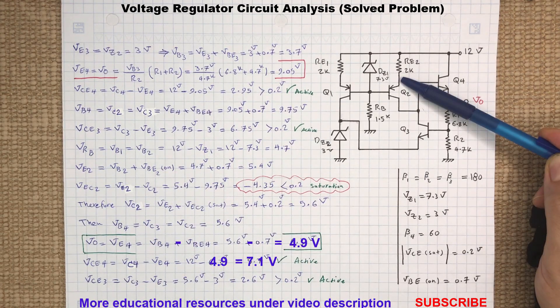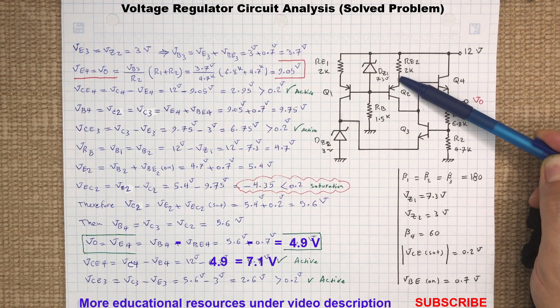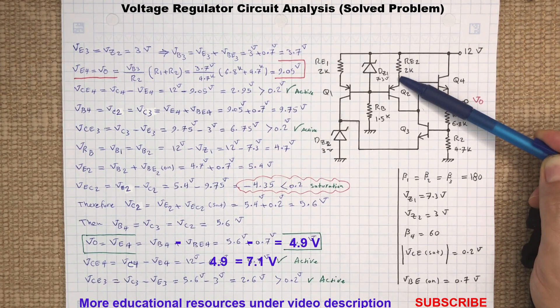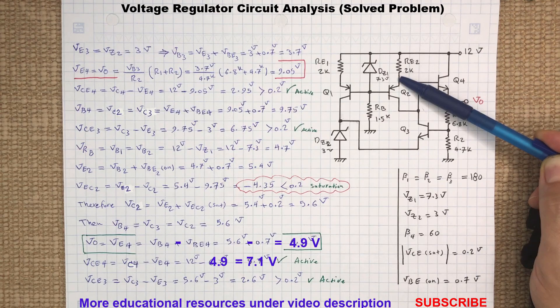To verify if Q2 is in active region, we will need to determine the voltage at the emitter of Q2. To do so, we start by calculating VBE2, which is the same voltage for base of Q1 and voltage across resistor RB.